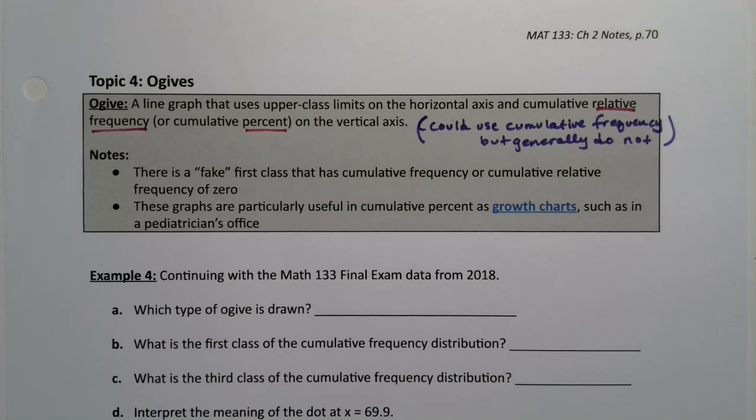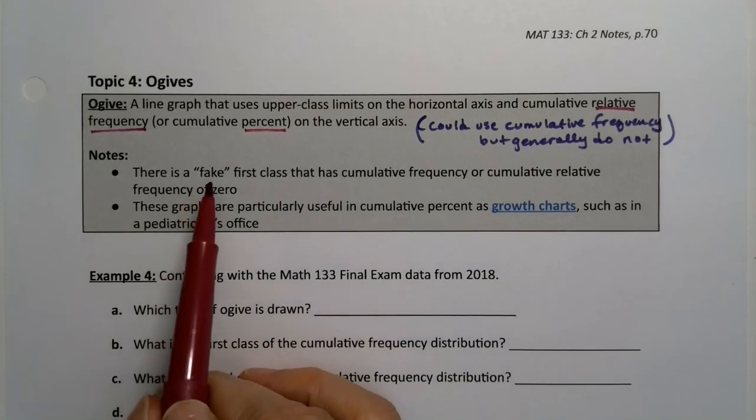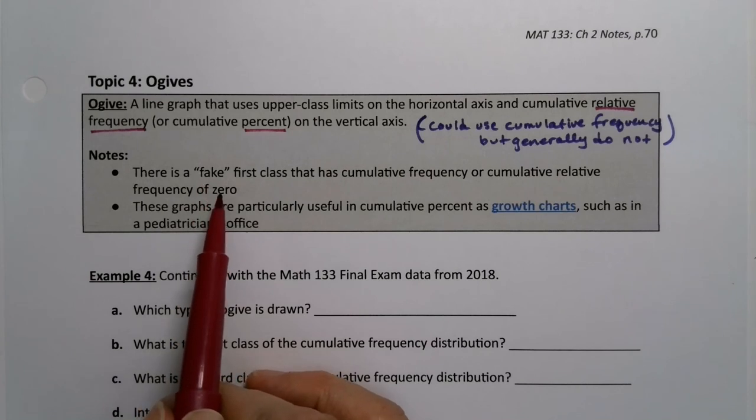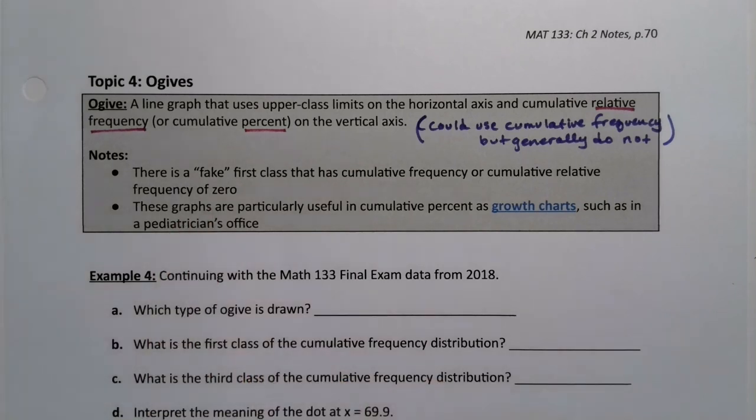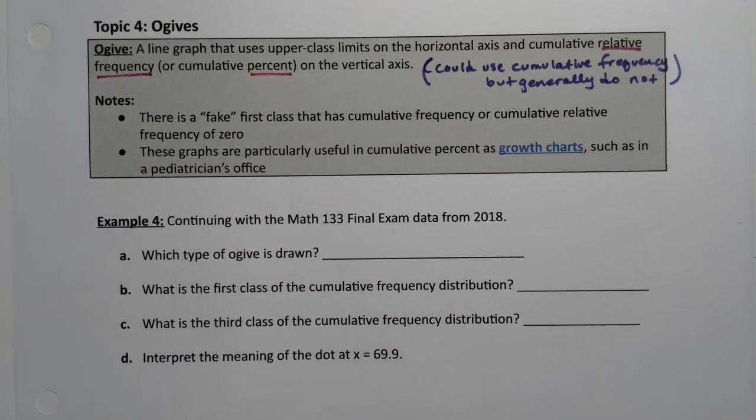Now just as when it's a polygon, there is a fake first class that's not really part of the table that exists and it has a frequency of zero. So you're going to start off at zero and they grow. So these graphs are particularly used in cumulative percents as growth charts, such as in a pediatrician's office.